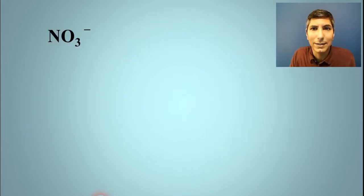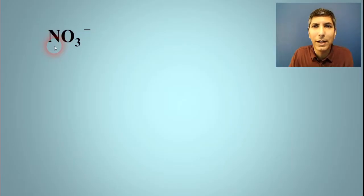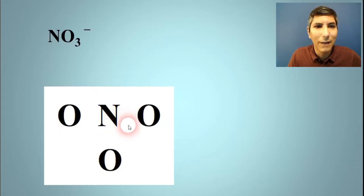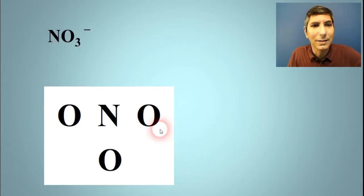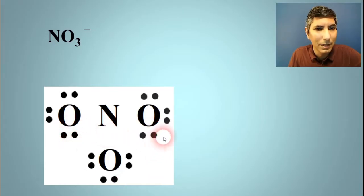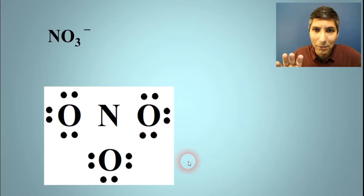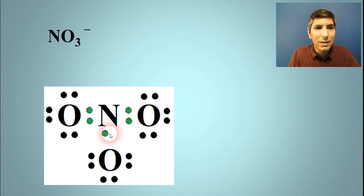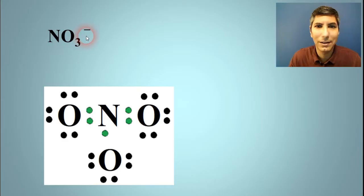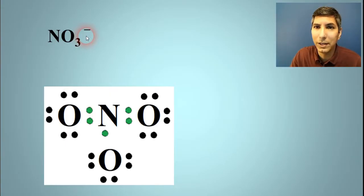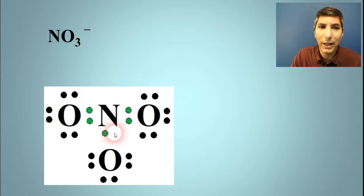Let's try another one — the nitrate polyatomic ion. This one's a little bit different; we'll see how we handle polyatomic ions. The nitrogen is going to be in the middle, and we're going to have the three oxygens surrounding it on the sides. We'll start with the outside: each oxygen needs to have six dots since oxygen is in group 16 — six dots here, six dots, and six dots for that one. The nitrogen is in group 15, so five dots for that one. You might notice that we have an odd number. Well, take a look at the negative sign — that tells us we're going to have to add one bonus electron somewhere.